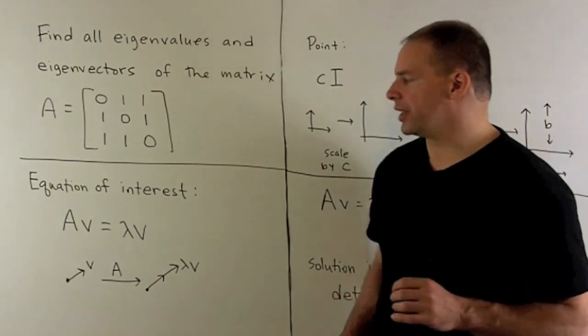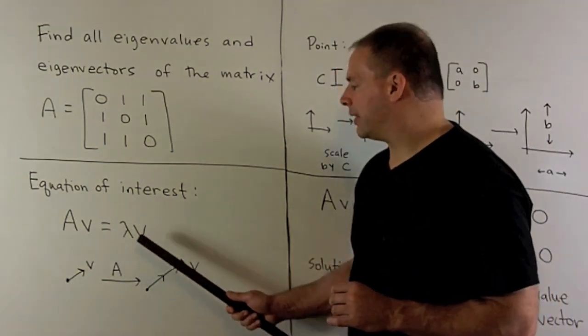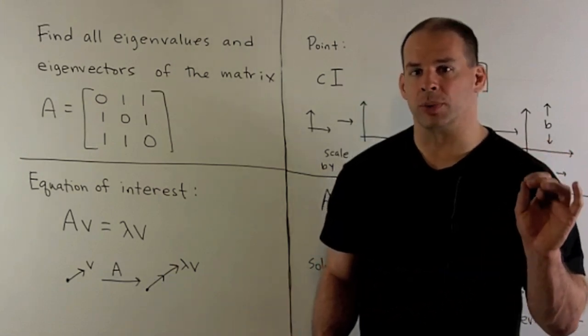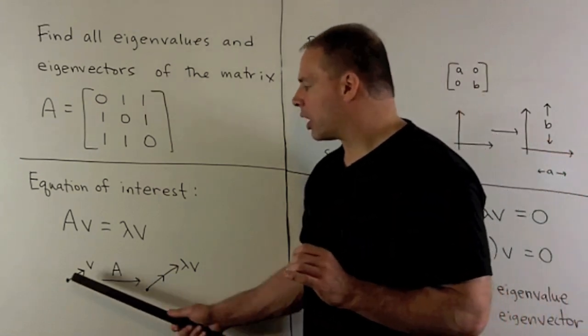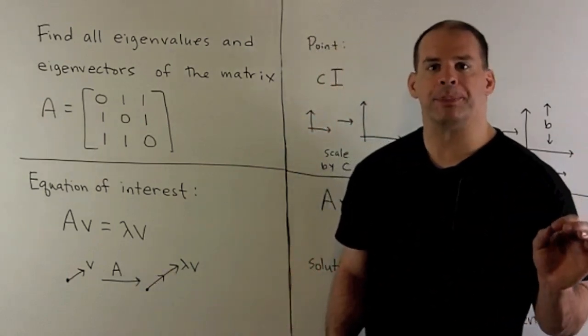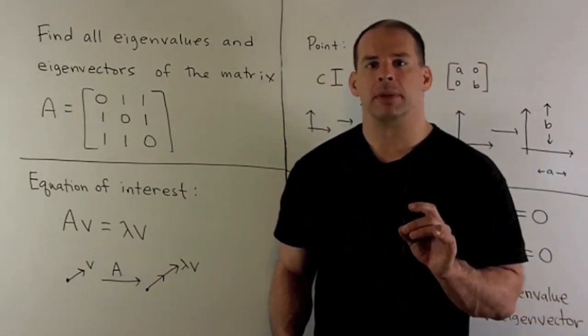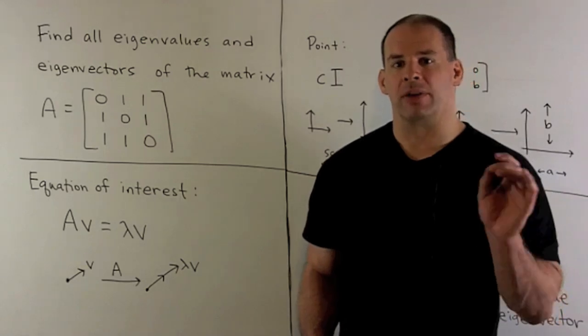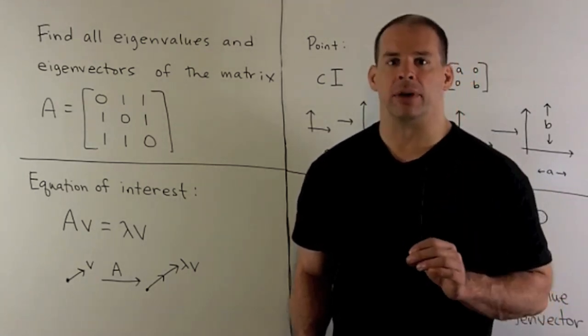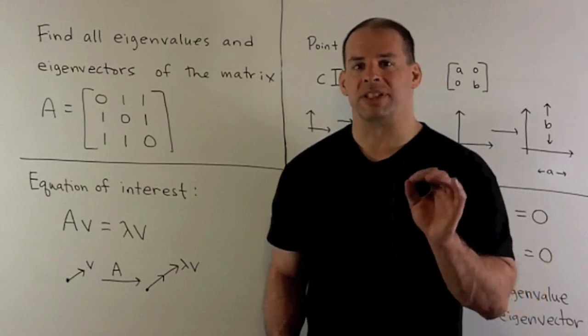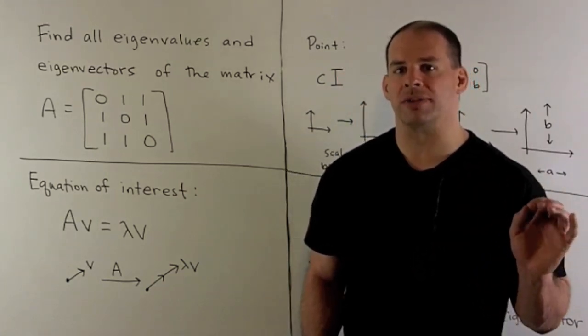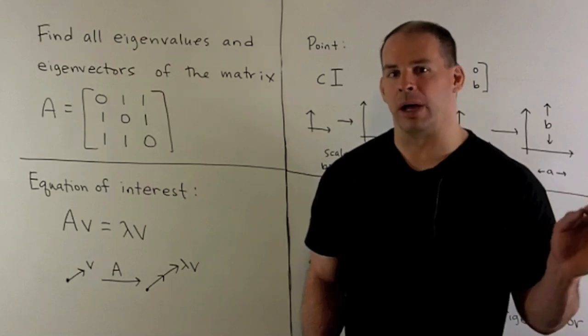Now, there are two unknowns here, the vector V and the scalar lambda. The picture that goes with this, we'll have our vector V in our vector space. We apply our matrix A. What comes out, if lambda is greater than 0, we'll have another vector pointing in the same direction as V, the length might be different. Lambda is less than 0, then our vector points in the opposite direction from V, and again, the length might be different.